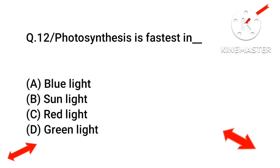Question number twelve: photosynthesis is faster in which condition? Option A blue light, option B sunlight, option C red light, and option D green light. The right answer will be red light, option number C, because photosynthesis is faster in red light.